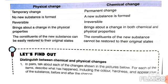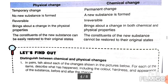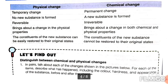In chemical change, a new substance is formed. Physical change is reversible, whereas chemical change is irreversible.